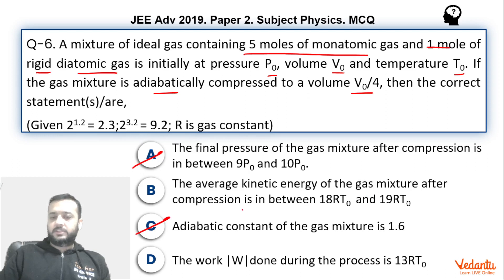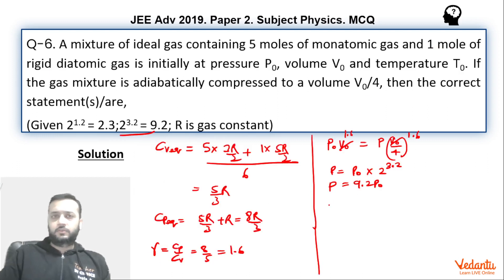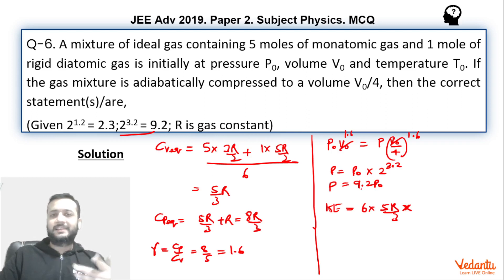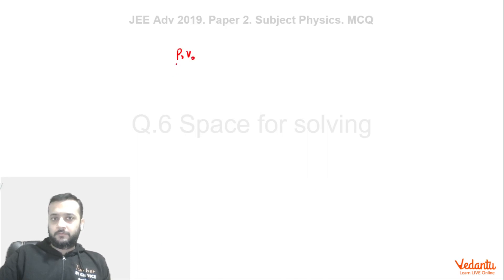The average kinetic energy of the gas mixture after compression is basically the internal energy, which is nCvT. So kinetic energy = internal energy = nCvT. Let's find the temperature first. We can use PV/T = constant. So P0V0/T0 = 9.2P0 × (V0/4) / T. Simplifying, the right side becomes 2.3 P0V0/T, so temperature becomes 2.3 T0.